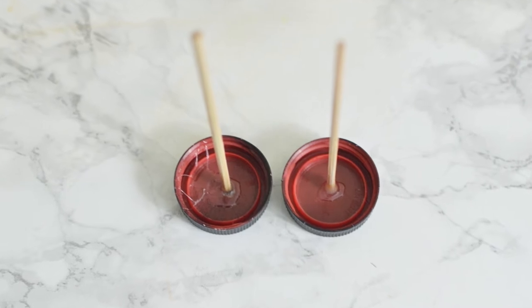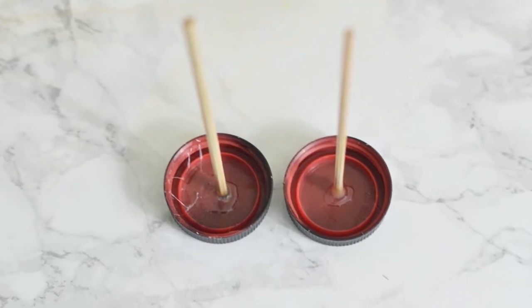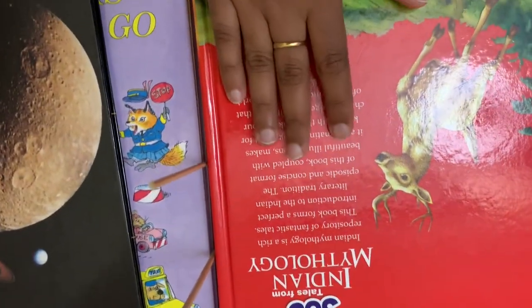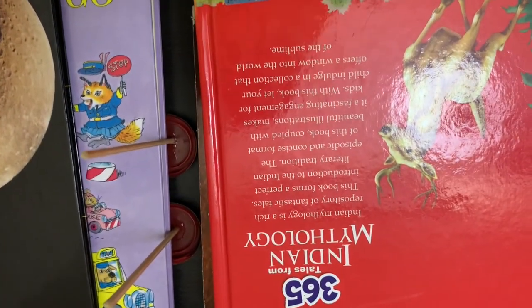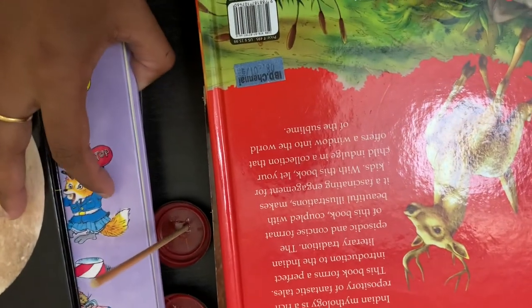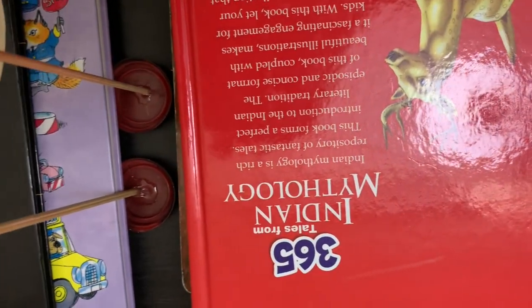To make the wheels, take two painted caps and two wooden skewers. Dip the end of the skewers in E6000 and place them in the center of the caps. To hold it in place I used a bunch of books like this. Leave them untouched for few hours until it dries completely.